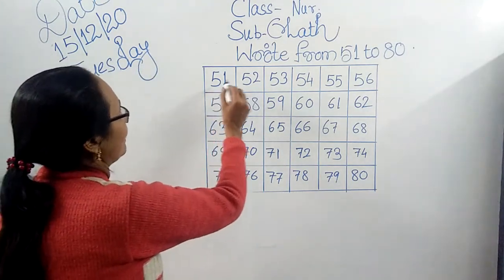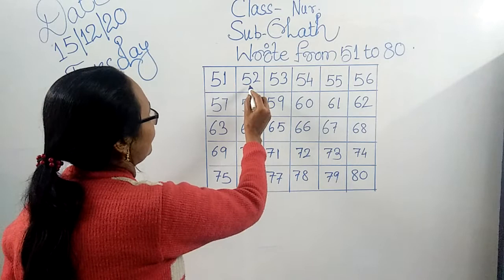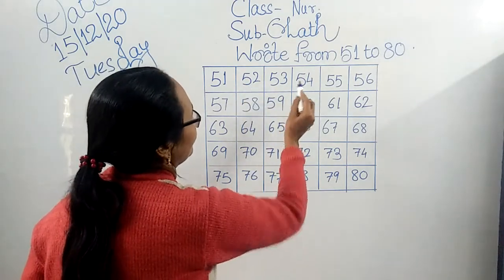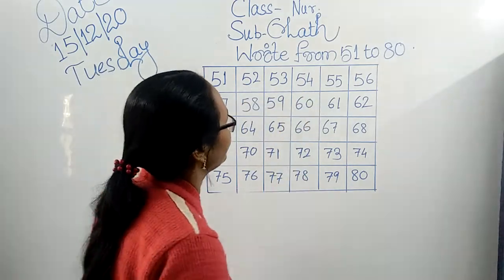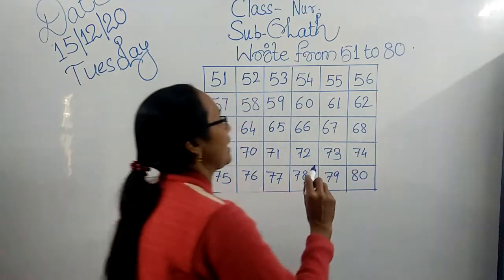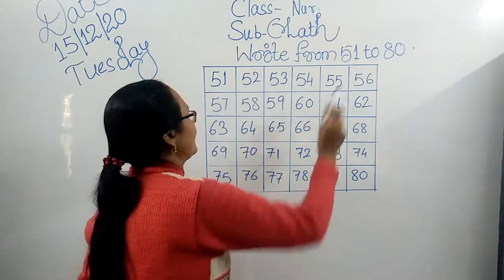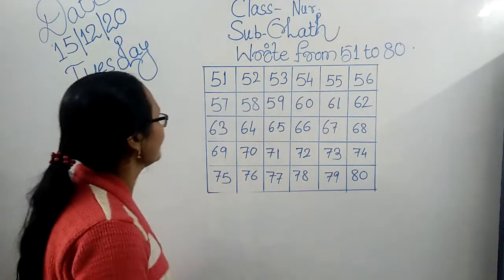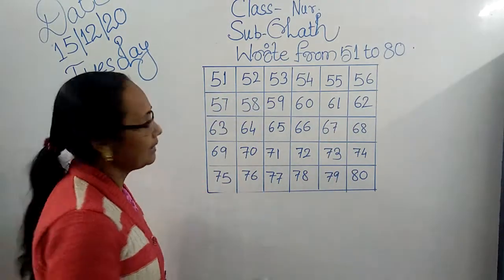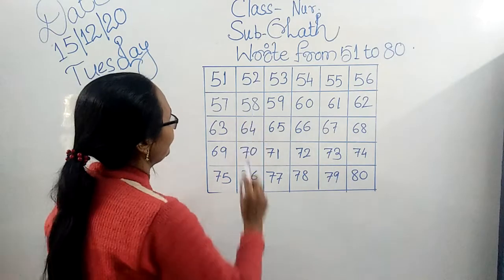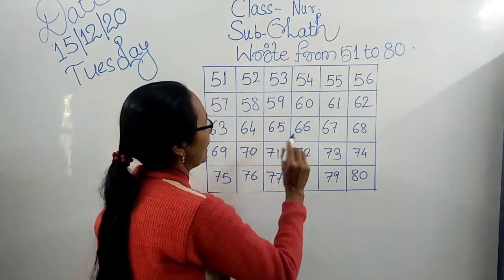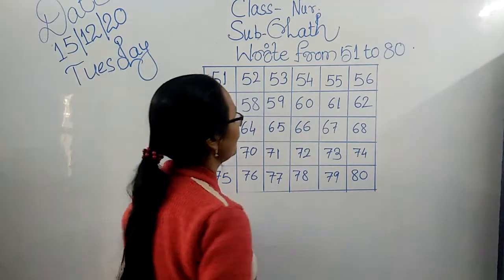5, 1 — 51. 5, 2 — 52. 5, 3 — 53. 5, 4 — 54. 5, 5 — 55. 5, 6 — 56. 5, 7 — 57. 5, 8 — 58. 5, 9 — 59. 6, 0.